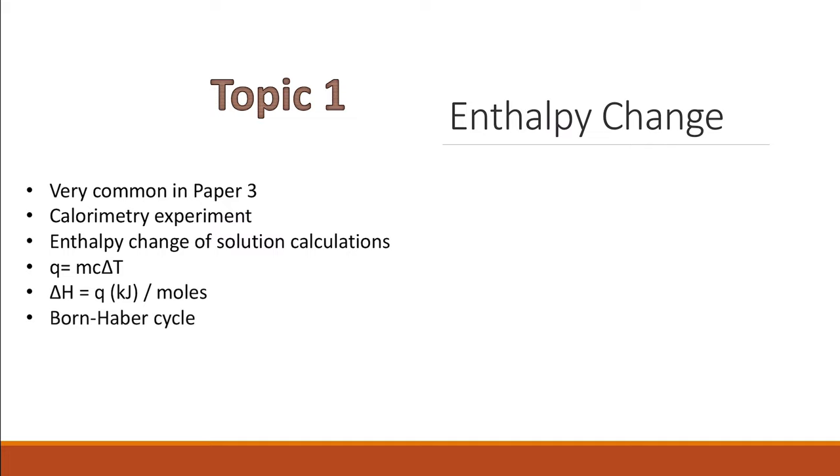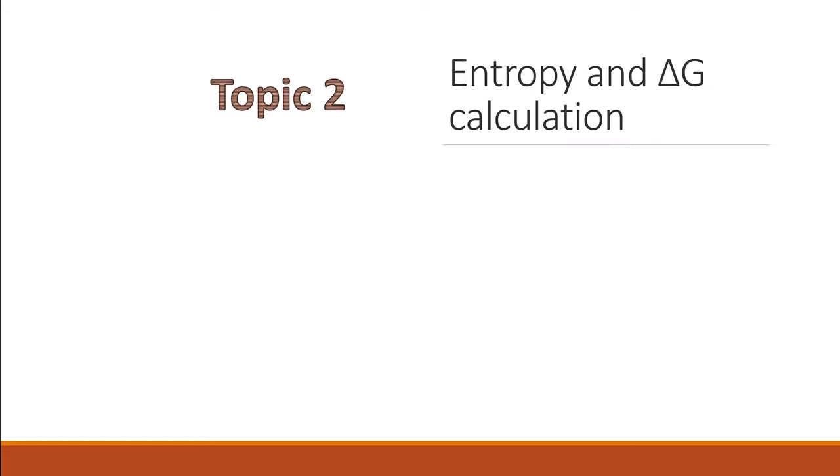The Born-Haber process is also very common in Paper 3. Entropy and delta G calculation, if it didn't feature in Paper 1, then expect it to be in Paper 3. If it featured in Paper 1, most probably it's not going to be in Paper 3. They could ask you about spontaneous reactions as well. This is very common if it's not in Paper 1 to show up or come up in Paper 3.